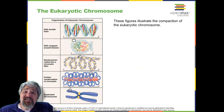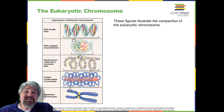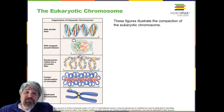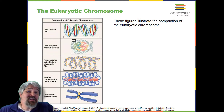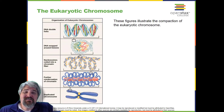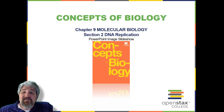In interphase — the phase of the cell cycle between mitosis during which the chromosomes are decondensed — eukaryotic chromosomes have two distinct regions that can be distinguished by staining. The darkly staining region usually contains genes that are not active and is found in the regions of the centromere and telomeres. The lightly staining region usually contains genes that are active, with DNA packaged around nucleosomes but not further compacted. That brings us to the end of Section 1: The Structure of DNA.